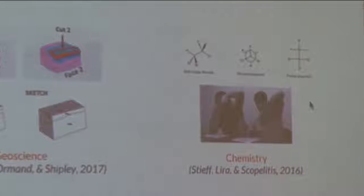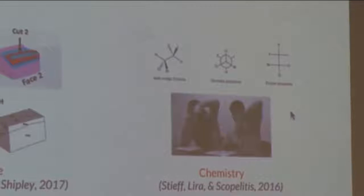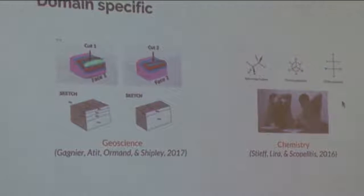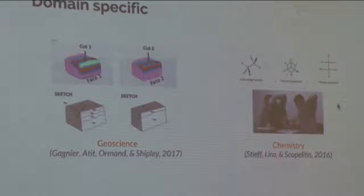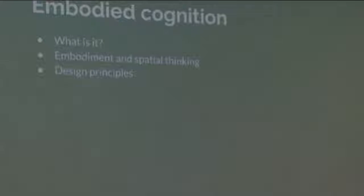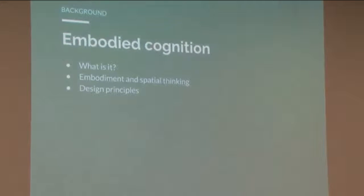What you may have noticed is that even though both interventions target spatial thinking, they do so using different activity structures — one uses sketching and predictive sketching, whereas the other uses gestures to represent and transform spatial information. There is no single approach to improving spatial thinking. In this talk, I want to make the case that spatial thinking may be particularly responsive to instruction informed by theories of embodied cognition.